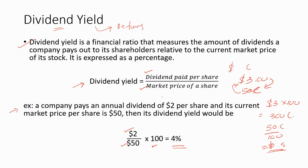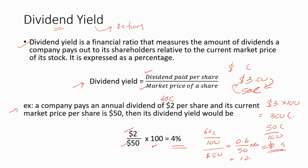Let's say the annual dividend is given in cents — for example, 60 cents. We convert 60 cents to a dollar value by dividing by 100, giving $0.60. Then divide by the market price per share of $50, and multiply by 100%. The dividend yield equals 1.2%.